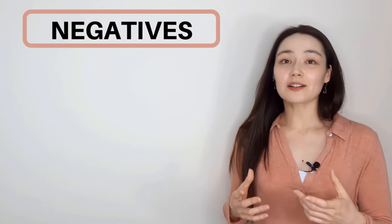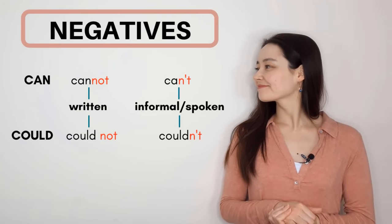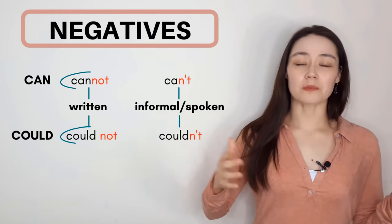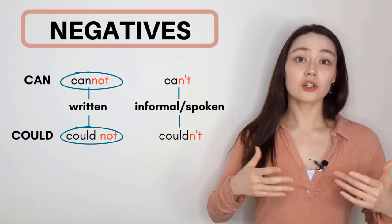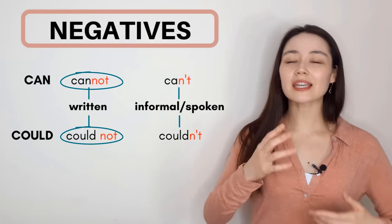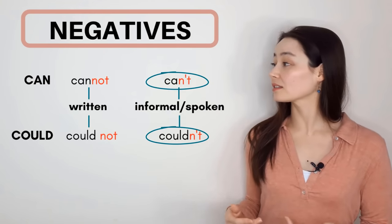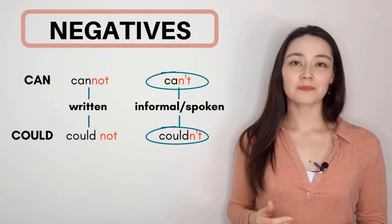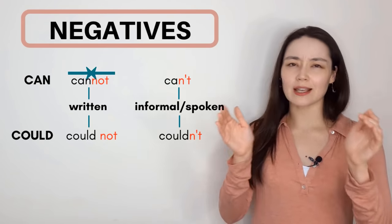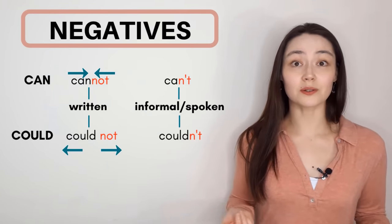Let's look at the negatives. The full forms — cannot, could not — are mainly used in writing. If you're speaking, just contract: can't, couldn't. Note that 'cannot' is written as one word and 'could not' is written as two.